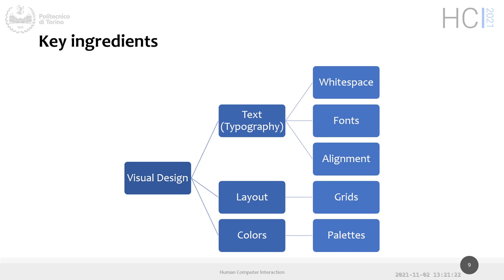These key ingredients — text, layouts, and colors — are the other elements that act as containers for the text. If most of the real content comes from textual elements, we need to think about where we put them and how we organize space into a consistent layout.